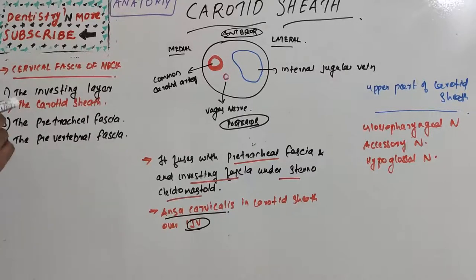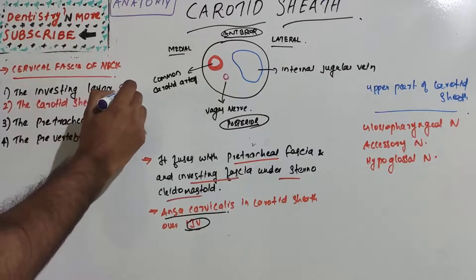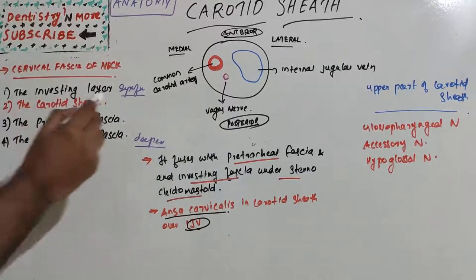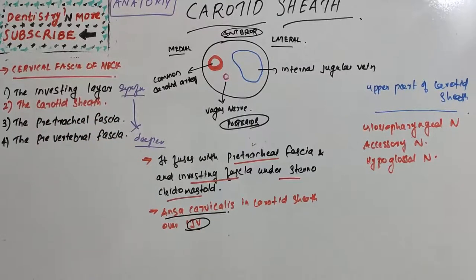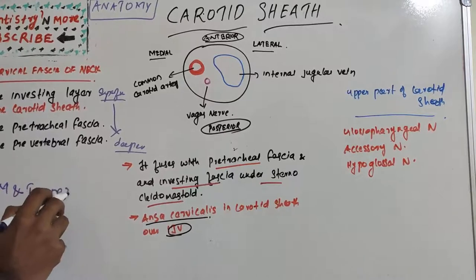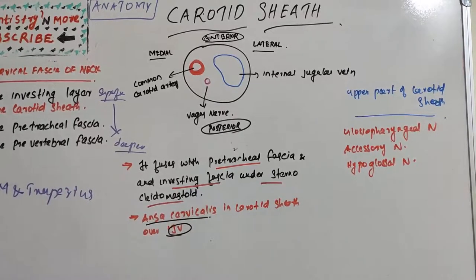The deep cervical fascia of the neck includes four layers from superficial to deeper. The first layer is the investing layer, which surrounds the sternocleidomastoid and trapezius muscles. The second layer is our current topic, the carotid sheath, which encompasses the vascular region of the neck.